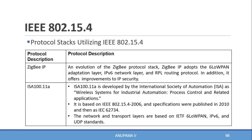ZigBee IP is an evolution of the ZigBee protocol stack. ZigBee IP adopts the 6LoWPAN adaptation layer, that is the IPv6 network layer, and the RPL routing protocol. The implementation of 6LoWPAN within ZigBee is called ZigBee IP.